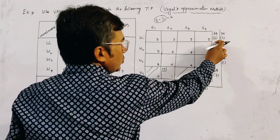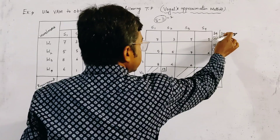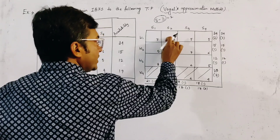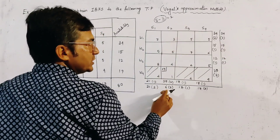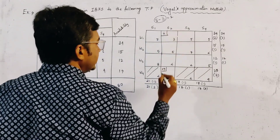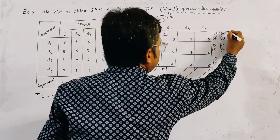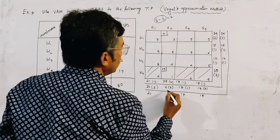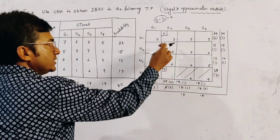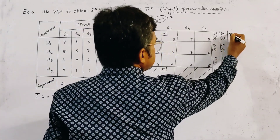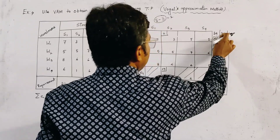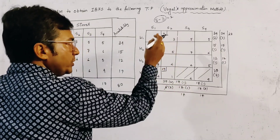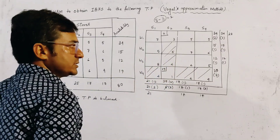Here we take the first row. The available amount is 34 and the minimum cost in the first row is 3. We want to allocate there first, but the demand is only 6 units, so we allocate 6 units. The remaining demand column amounts become 21, 17, 17, while the fulfilled demand becomes 0 for that column. The remaining availability for row 1 is 34 minus 6 equals 28. The second column is now crossed off because its demand is fulfilled.